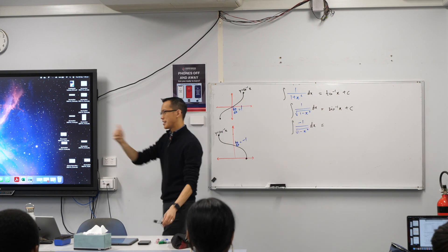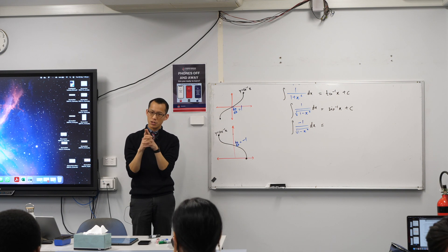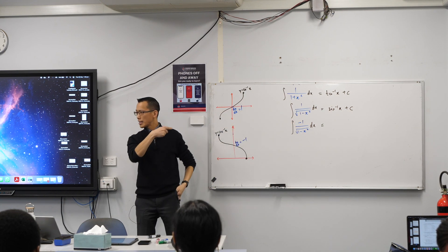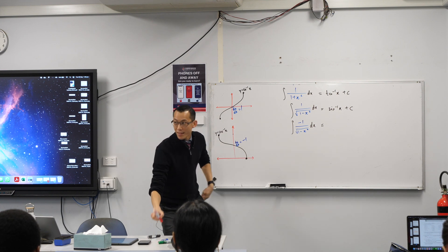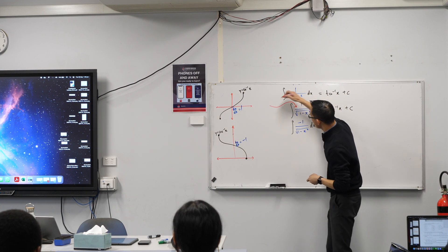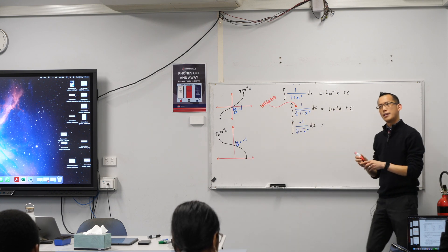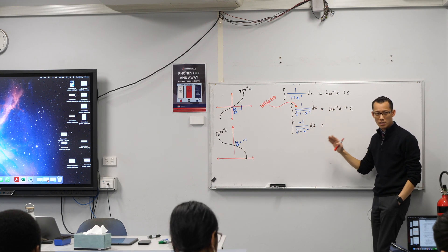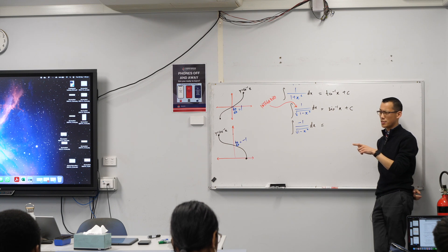Now you already know — we did tan inverse, we did sin inverse, so I guess you know what the last one is. But you need to stop for a second and recognise the difference between these two integrands. By the way, that thing in blue being integrated — do you know what it's called? It's called the integrand, the thing being integrated. The integrand from example two to example three — all that's different is what? It's just that negative, right? You've got to be careful: it's the fact that there's a negative, not a positive.